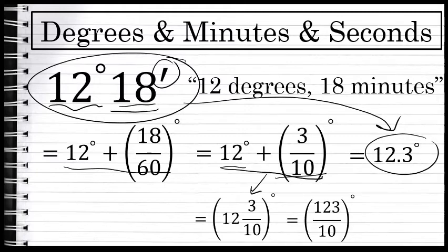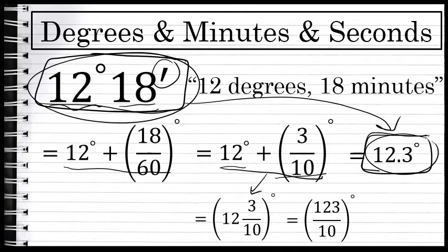So I actually have on the screen right now four different ways to represent the same degree measure: 12 degrees 18 minutes, 12.3 degrees, 12 and 3/10 degrees, and 123/10 degrees.